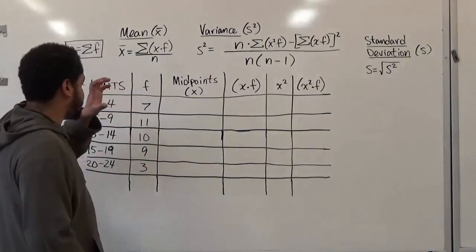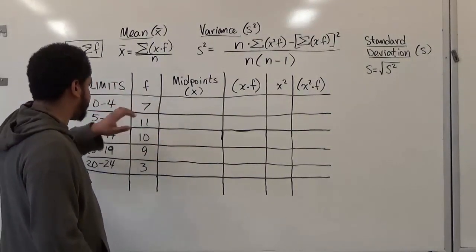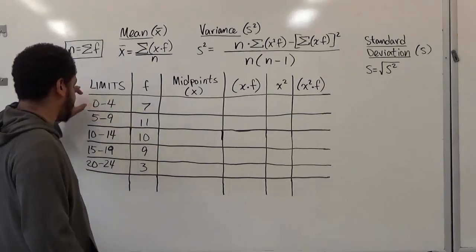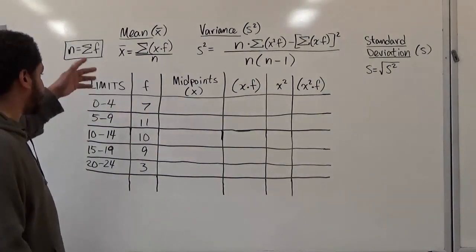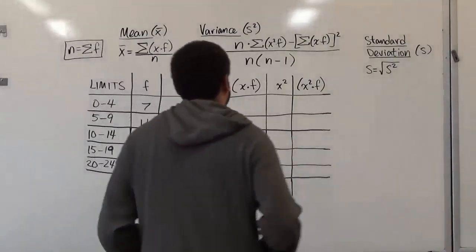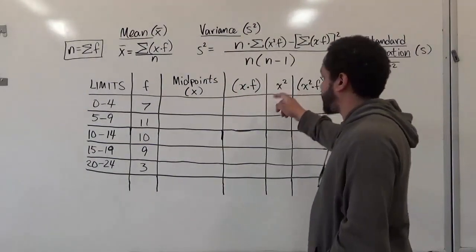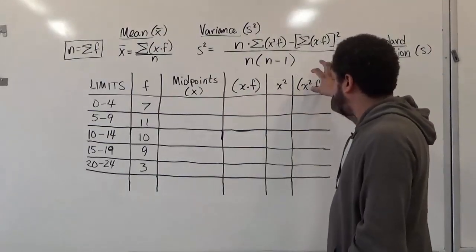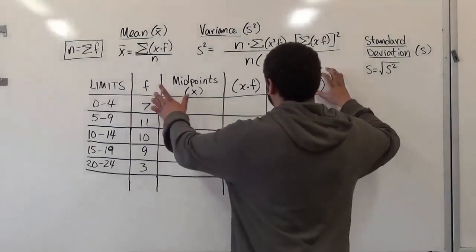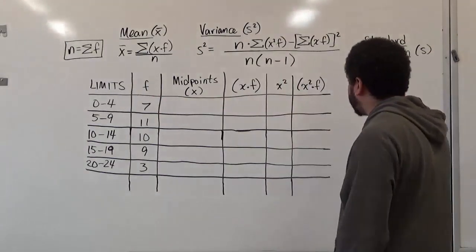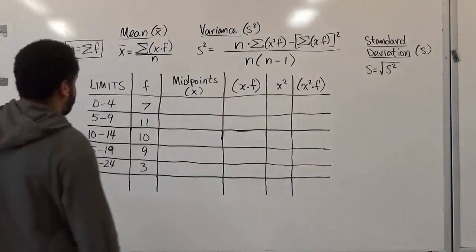We'll have an approximate amount of how much each frequency, each sample, contributes to their values, and we'll divide that by the total number of samples to get the average. Thirdly, for the variance and standard deviation, we'll have to take the midpoint, square it, and multiply this column by the frequency column to compute x² times f. Now let's begin these calculations.